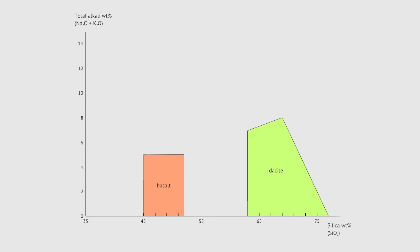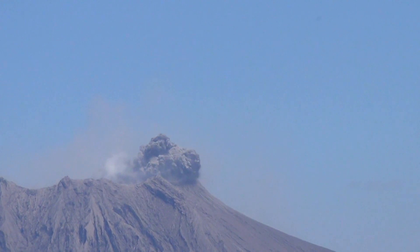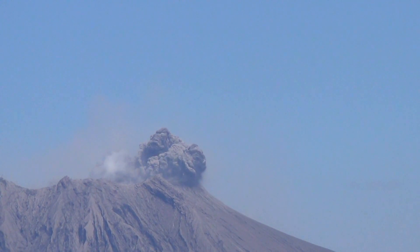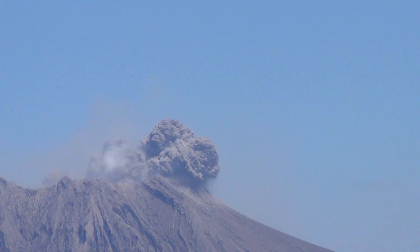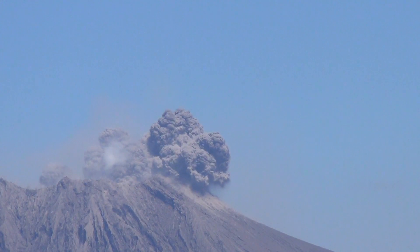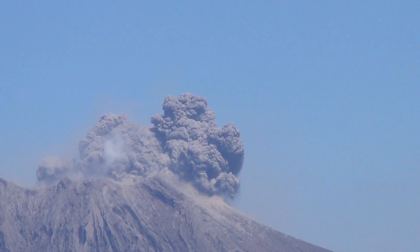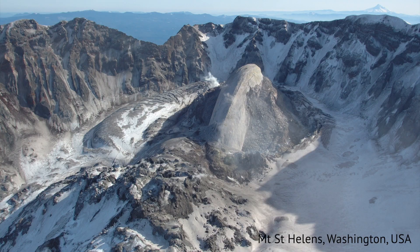Over here we have dacite, a rock that contains much more silica than basalt. The lava that produces dacite is quite sticky because of its silica content, and this makes it explosive. The eruption of Mount St. Helens in 1980 produced large amounts of dacite.